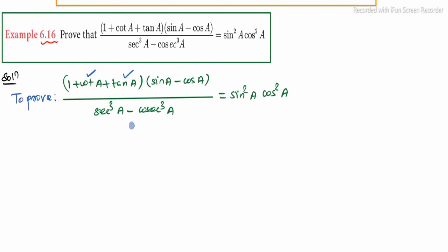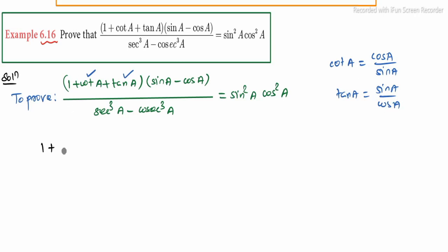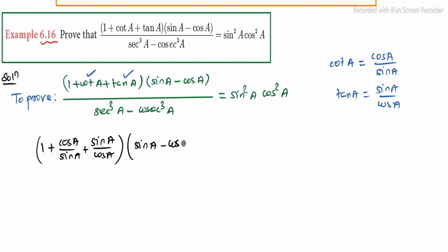First, take the LHS. Substitute the ratios: cot A equals cos A divided by sin A, and tan A equals sin A divided by cos A. So we have 1 plus cos A over sin A plus sin A over cos A, into (sin A minus cos A).